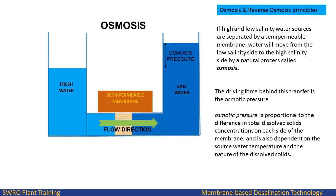If high and low salinity water sources are separated by a semi-permeable membrane, water will move from the low salinity side to the high salinity side by a natural process called osmosis. The driving force behind this transfer is the osmotic pressure. This pressure is proportional to the difference in total dissolved solids concentrations on each side of the membrane, and is also dependent on the source water temperature and the nature of the dissolved solids.